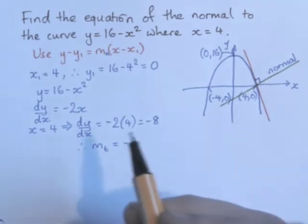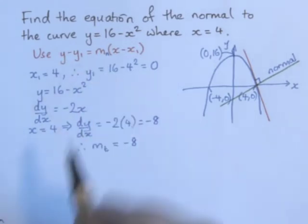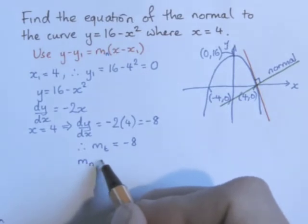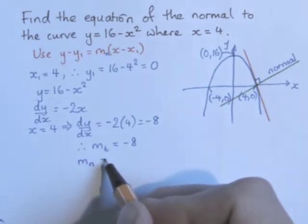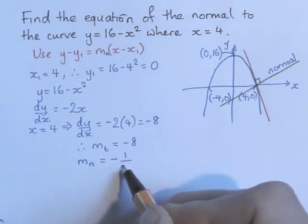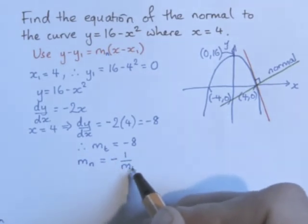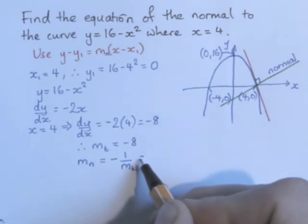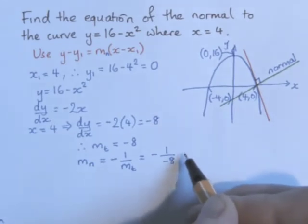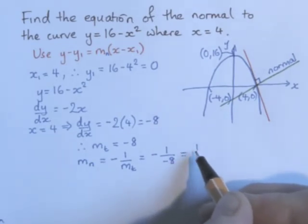But then, we want the gradient of the normal, and we're going to find it by using the fact that they are perpendicular. So the gradient of the normal will be the negative reciprocal of the gradient of the tangent. So in this case, it will be minus 1 over minus 8, which is just 1/8.